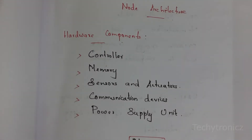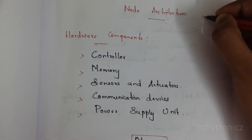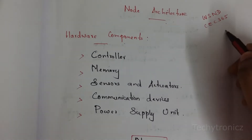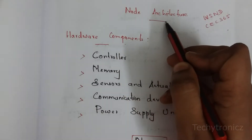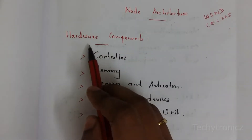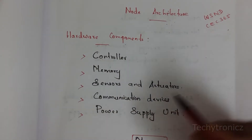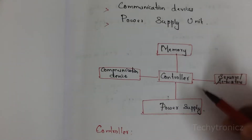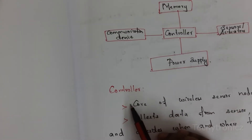Hi students, in this video the topic is node architecture. The topic for CEC 365, Wireless Sensor Network Design, regulation 2021 is node architecture. The hardware components include: controller, memory, sensors and actuators, communication devices, and power supply unit. This is the basic block diagram for hardware components.